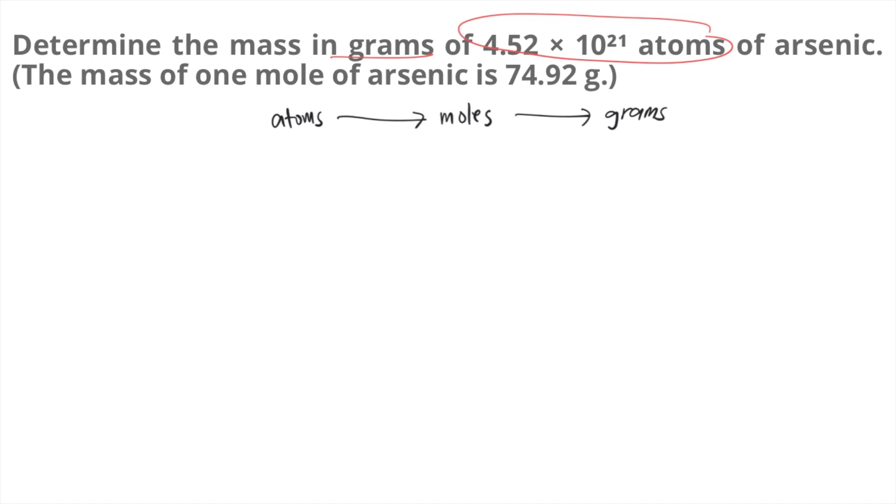Okay, so we start with the given 4.52 times 10 to the 21 atoms. So how do you convert atoms to moles? Our conversion factor is Avogadro's number.